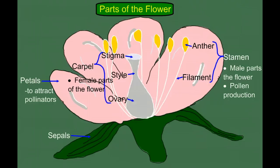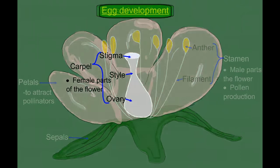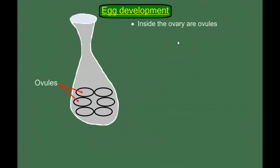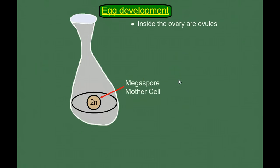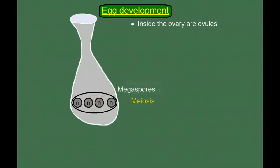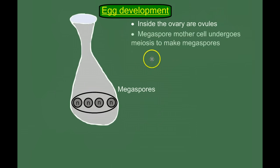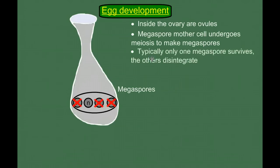Now let's look at what's happening on the female side of things, inside the carpel. If we zoom in and look inside the ovary, we would see many structures — sometimes more than one, sometimes just one. These egg-producing structures are called ovules, so inside the ovary there are ovules. In an ovule, there's a diploid cell — this is the sporophyte generation. This is the megaspore mother cell; it's going to give rise to the megaspore. This diploid cell undergoes meiosis forming haploid megaspores. Most of the time all the megaspores except for one disintegrate, so only one megaspore survives.